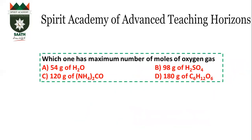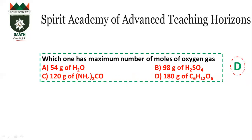Which has the maximum number of moles of oxygen? Glucose has 6 oxygens — 1 mole of glucose is 180 grams, giving 6 oxygen atoms. Another compound gives 4 oxygens per mole at 98 grams. Water at 58 grams gives 3 moles, so 3 oxygens. Urea at 120 grams gives 2 moles, so 2 oxygens. The most oxygen comes from glucose — answer D.